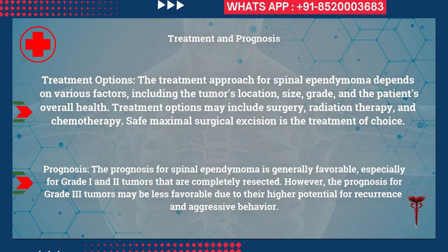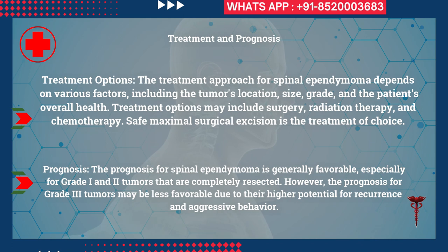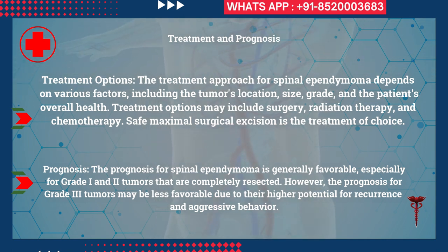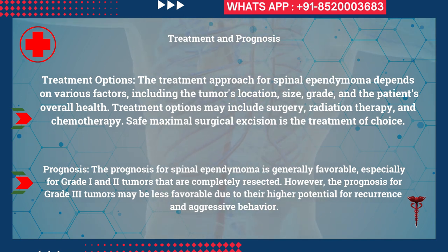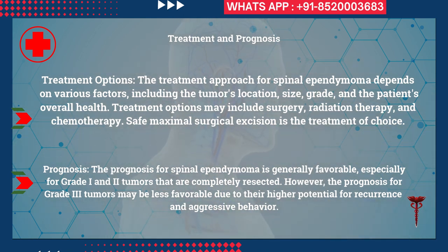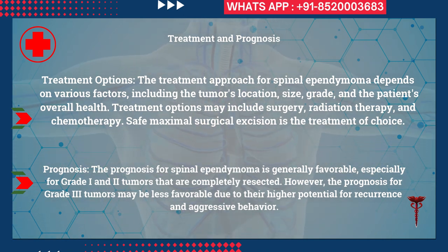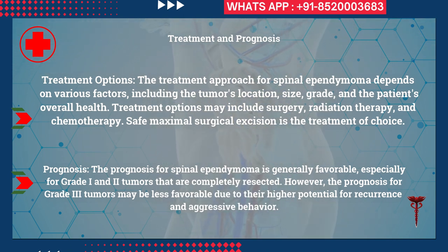The treatment approach for spinal ependymomas depends on various factors including the tumor's location, size, grade, and the patient's overall health. Treatment may include surgery, radiation therapy, and chemotherapy. However, safe maximal surgical excision is the treatment of choice, followed by radiotherapy for any residual tumor.